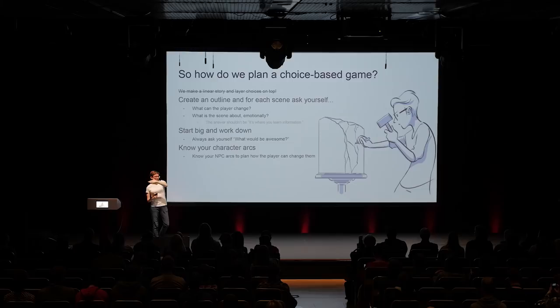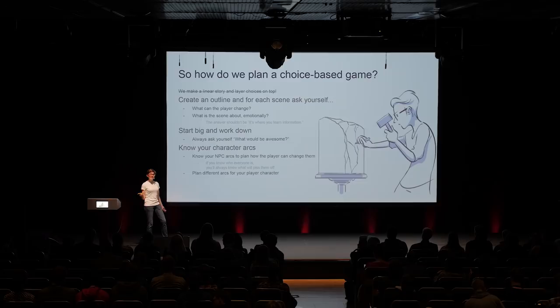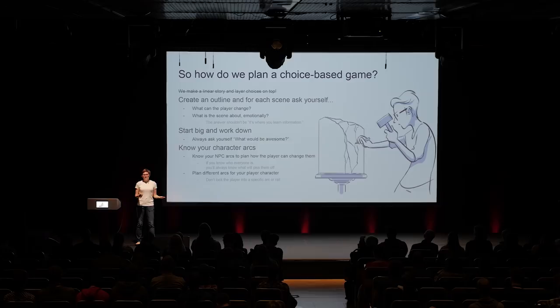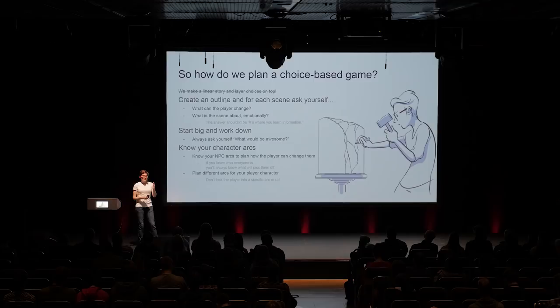Know your NPC character arcs — that will allow you to figure out how we can branch that content. If you know who everyone is, you'll always know what will upset them. Plan different arcs for your player character too. Your player character is no different from an NPC — just because the player is controlling them doesn't mean their arcs don't matter; they're actually the most important of all. Don't lock players into a specific arc or rail — they play in different styles, and branching narrative is about letting players play the way they want and rewarding them no matter what they choose.